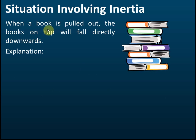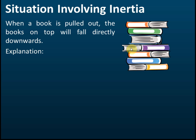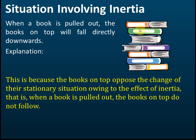The next example: a book is pulled out from a stack, and the books on top will fall directly downwards. If we have a few books stacked and you quickly pull out one of them, you will find that the books on top do not move together with that book — instead they just fall directly downward.